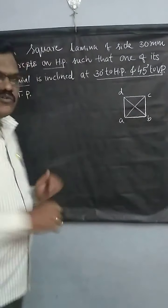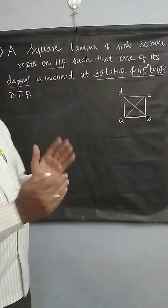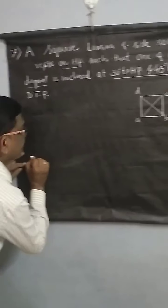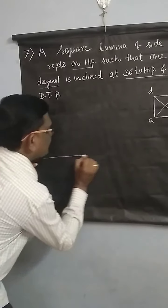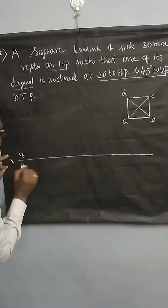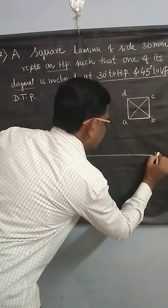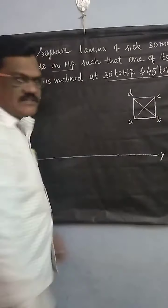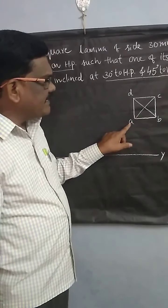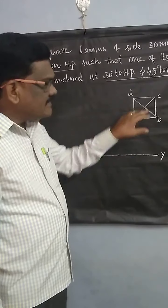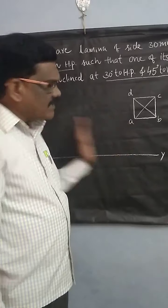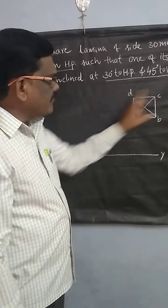That is why you have to write the true shape of the lamina such that the corner should come towards the left hand side. You have to write the square lamina like this, indicating that it is resting on side AD on HP. But you have to write this same square lamina such that A should come towards the left hand side. First, you have to write the square like this.